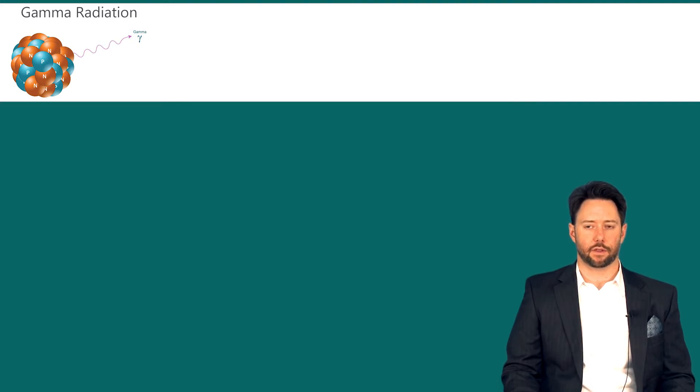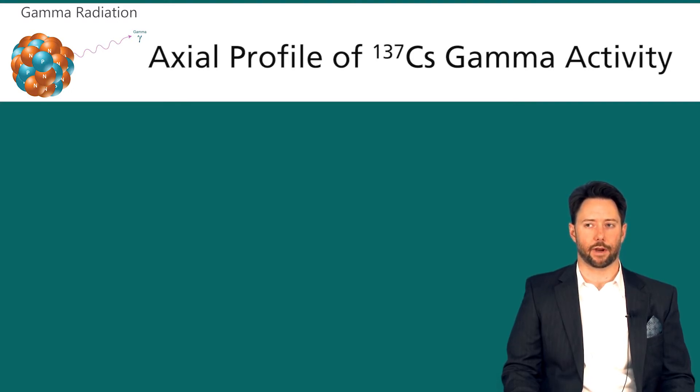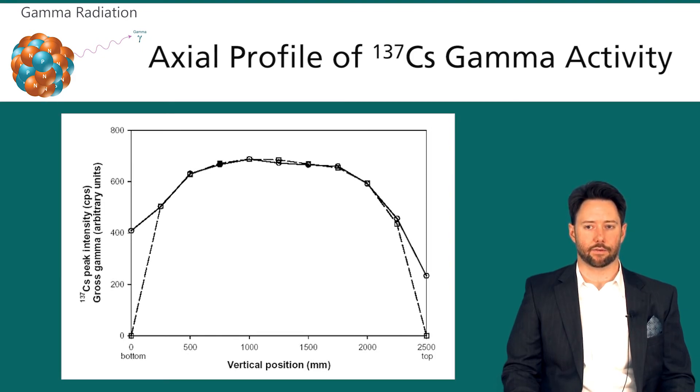Now let's take a look quickly at the axial profile of gamma ray activities, and we will focus specifically on the cesium-137 gamma ray activity. In this figure you have the cesium-137 peak intensity on the vertical axis as a function of the vertical detector position alongside the spent fuel assembly from bottom to top on the horizontal axis.